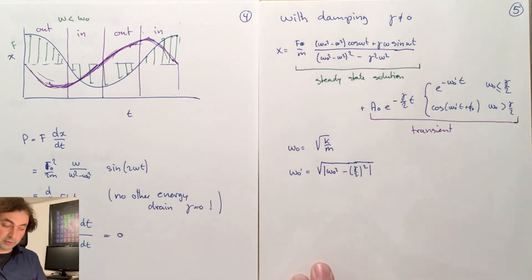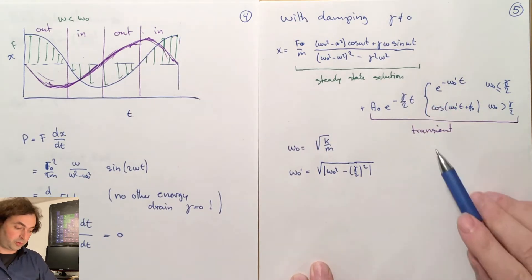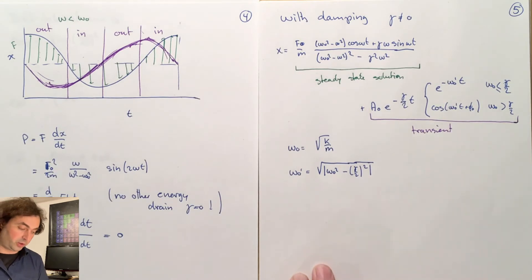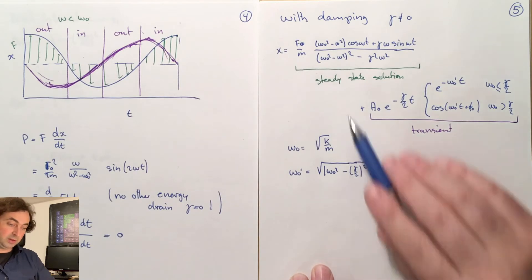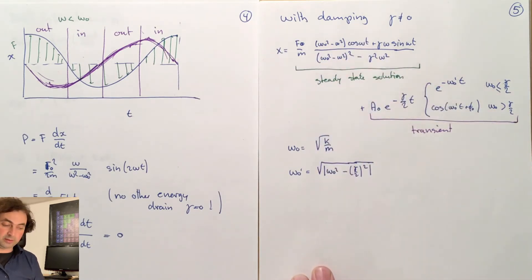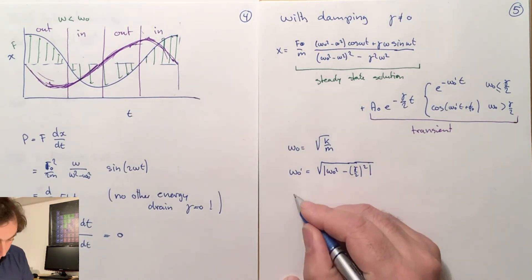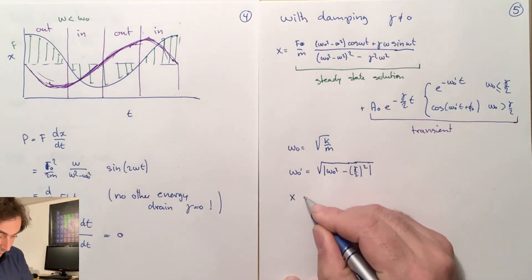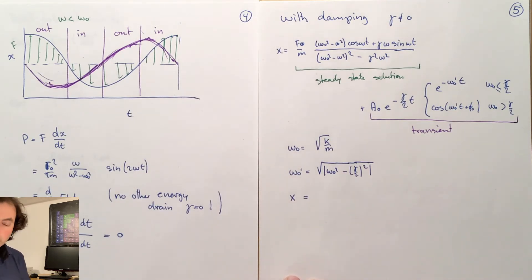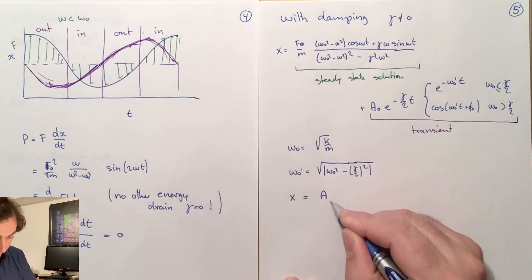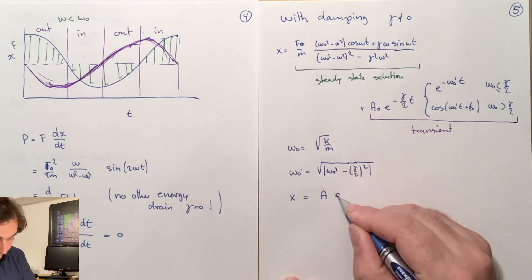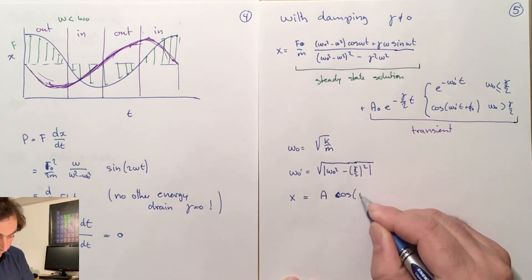If you have a driving force you might have a transient solution in the beginning, but if you wait long enough this will be damped such that we can look at just the steady state solution to calculate our linear response. Just as in the case of the undamped harmonic oscillator, we want to express this solution in terms of an amplitude and a phase.